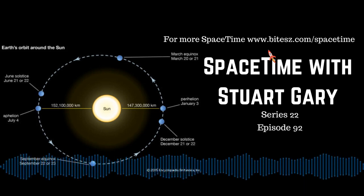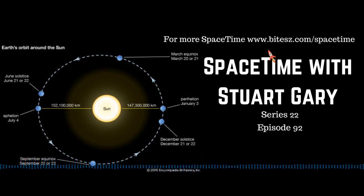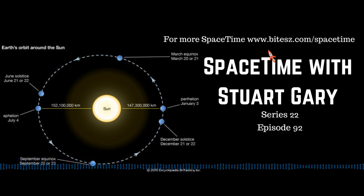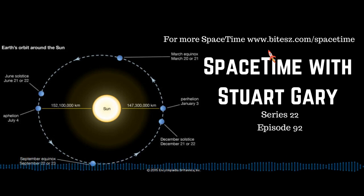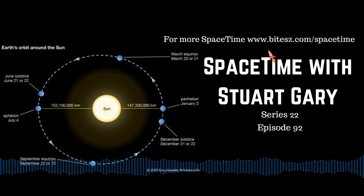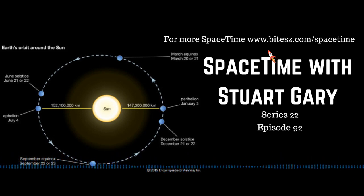Looking to the east — to the left if you're facing south — you'll find a really bright star called Canopus, the second brightest star in the night sky. You really can't miss it. Further still around to the east, you will see the brightest star in the sky — known as the Dog Star because it's in the constellation Canis Major, or Greater Dog. That star, of course, is Sirius.